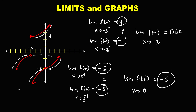To find the value of f(−3): since this is the shaded circle, this function is equal to 4. For f(0): this is the shaded circle, and this function is equal to negative 5.